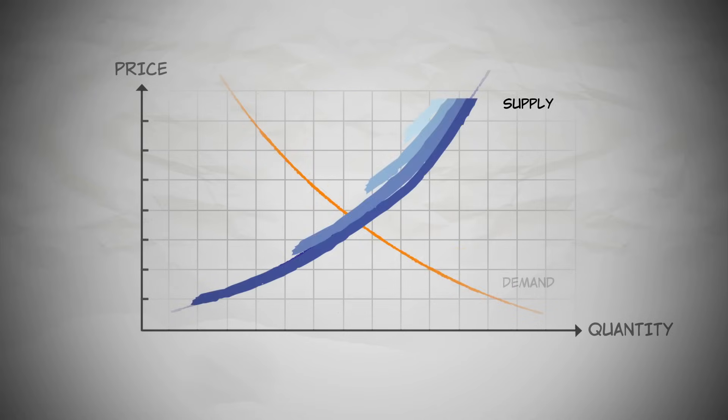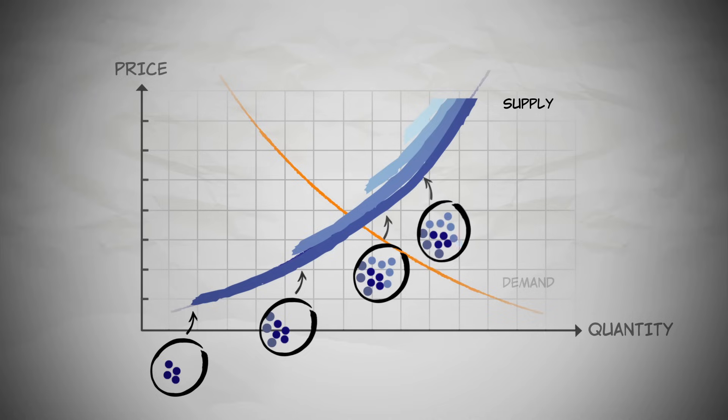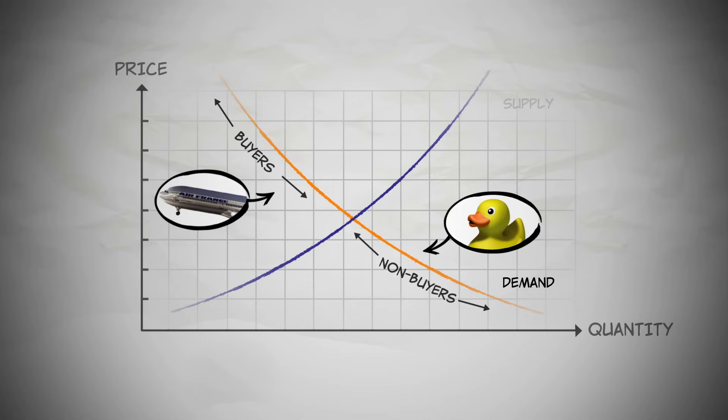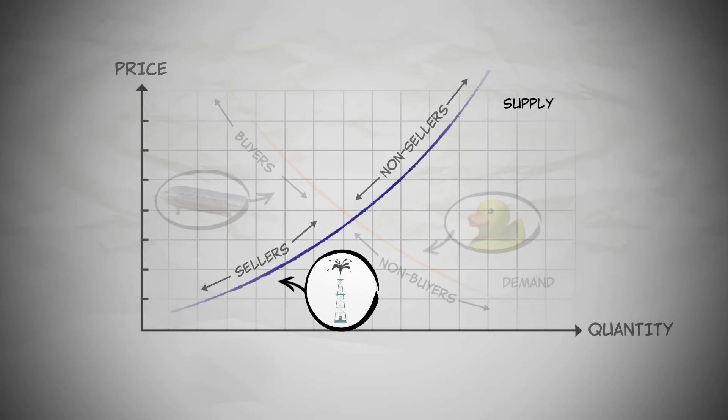On the supply side, at each price on the supply curve, we're looking at a group of suppliers whose cost of extraction is low enough to be profitable at that price. At the equilibrium price, these higher value groups are the buyers, and these lower value groups are the non-buyers. Also notice that every seller has lower costs than any of the non-sellers.